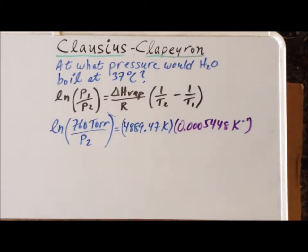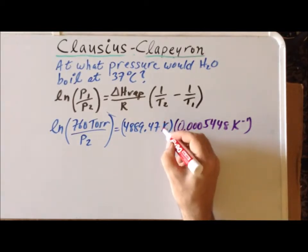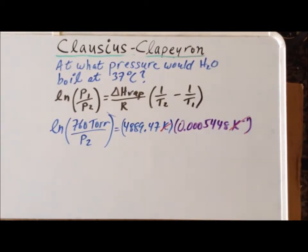So that's a good thing to see because now we can cancel the units of Kelvin and inverse Kelvin. So the right hand side becomes unitless, which makes sense because since we're taking a natural log on the left hand side, we know that has to be unitless as well.